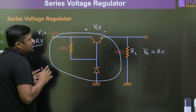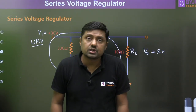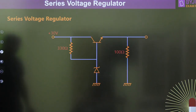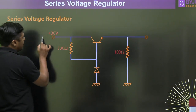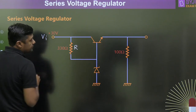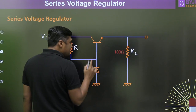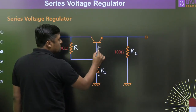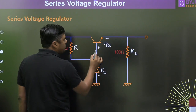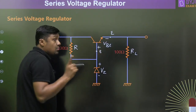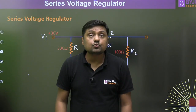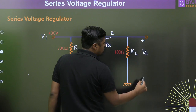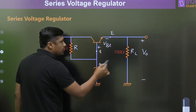I am going to explain everything about the diagram so you can solve questions in competitive exams like ESE and PSUs. Let VI be the input, R be the series resistor, and RL the load. Always remember: the Zener diode should be in the breakdown region — if it is, the voltage VZ is fixed. The transistor should be in the active region, so the base-to-emitter voltage VBE is constant. Writing KVL gives us the output voltage V0 across RL.